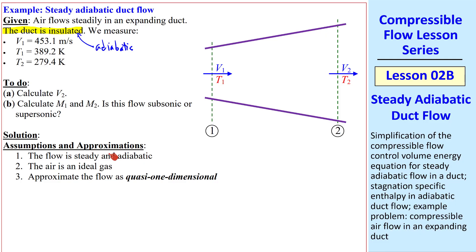As usual, we list our assumptions and approximations. The flow is steady and adiabatic. The air is an ideal gas. And we approximate the flow as quasi-one-dimensional.